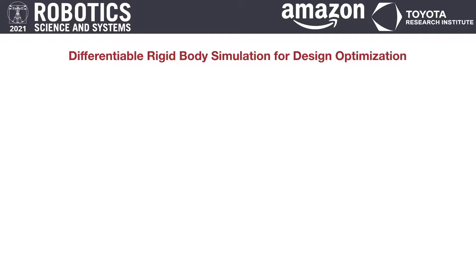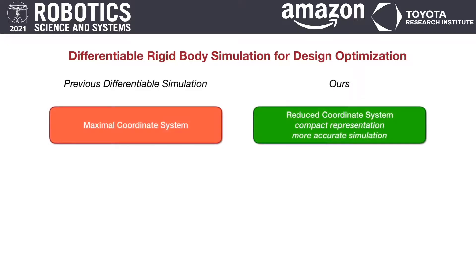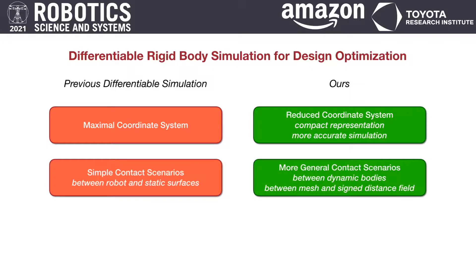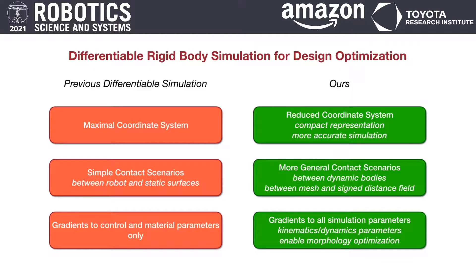To exploit the differentiability of our deformation-based parameterization, we developed a differentiable rigid body simulation for contact-rich manipulation tasks. There are three key features of our simulation compared to previous works. First, our simulation works in a reduced coordinate system to make the representation compact and accurate. Second, we extend the penalty-based contact model in previous work to more general contact scenarios involving two dynamic bodies, which are required by manipulation tasks. Finally, we derive the analytical gradients of the simulation with respect to a full spectrum of kinematics and dynamics parameters of the robot.